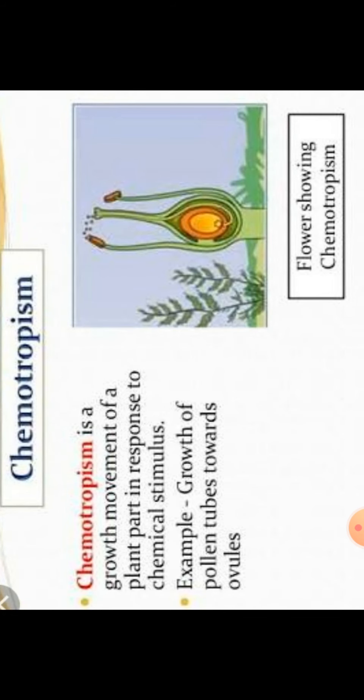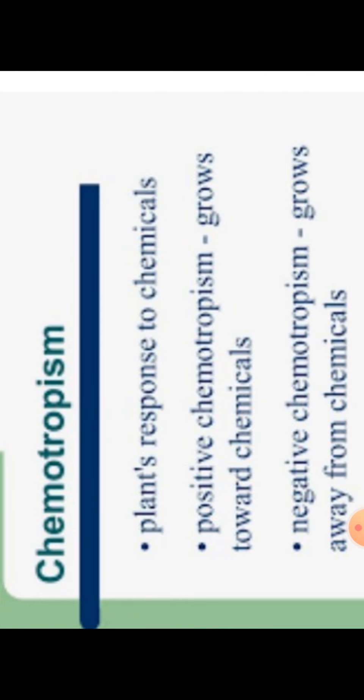Chemotropism is the response of a plant part to a chemical stimulus. For example, pollen grains stick to the stigma and grow to form a pollen tube. The pollen tube grows towards the ovule due to the secretion of some chemicals that favor growth in the direction of the ovule. Here also the response can be positive — towards the chemical — or negative — away from the chemical.